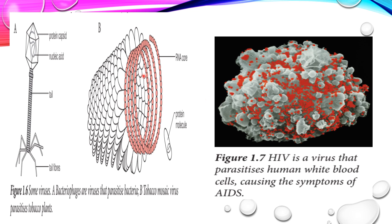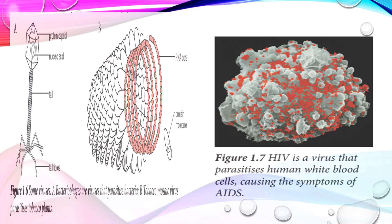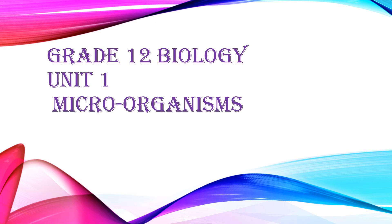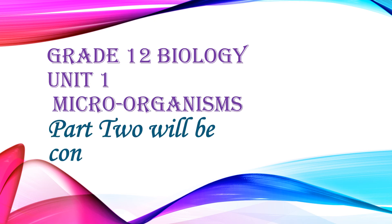An example is the HIV virus, which parasitizes human white blood cells, causing the symptoms of AIDS. This is part two. We will continue to talk about bacteria next.